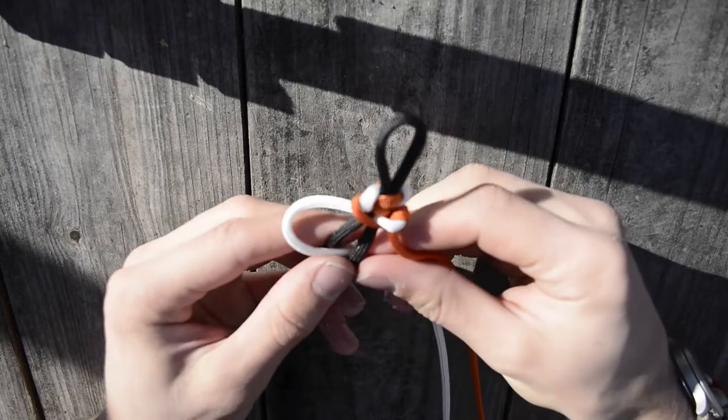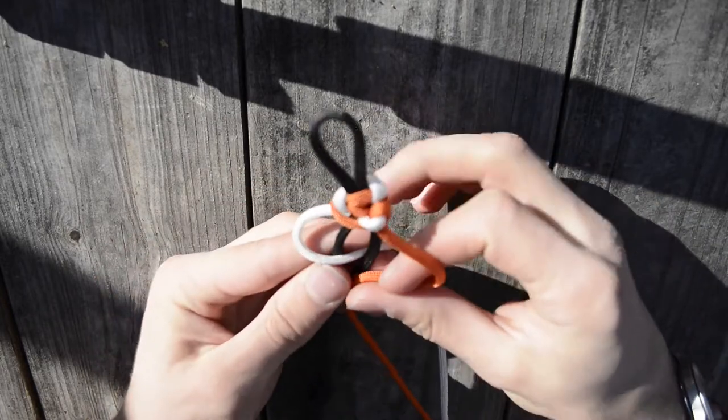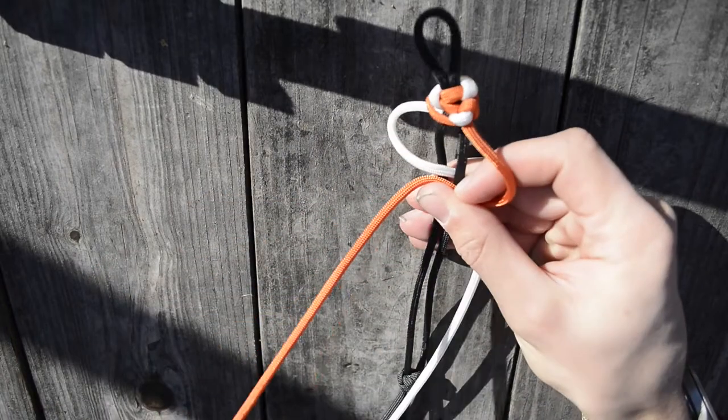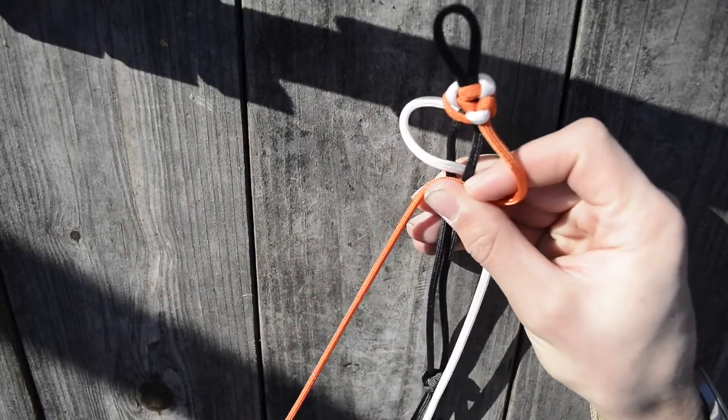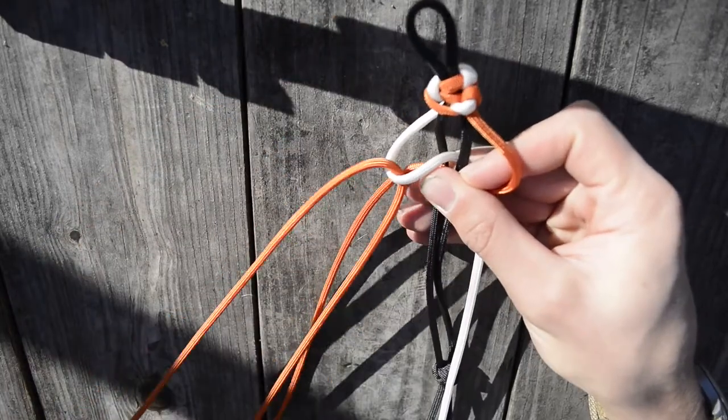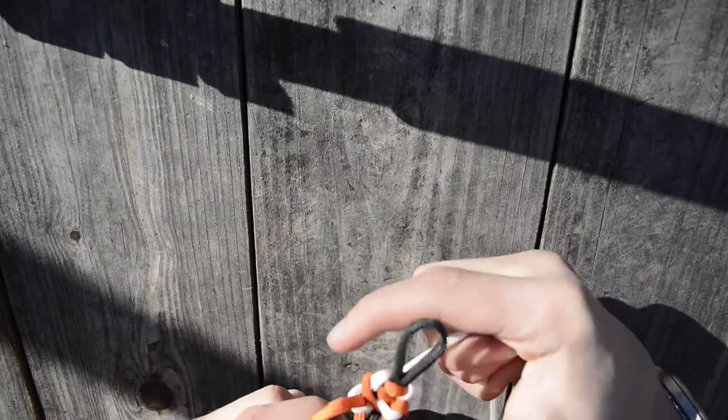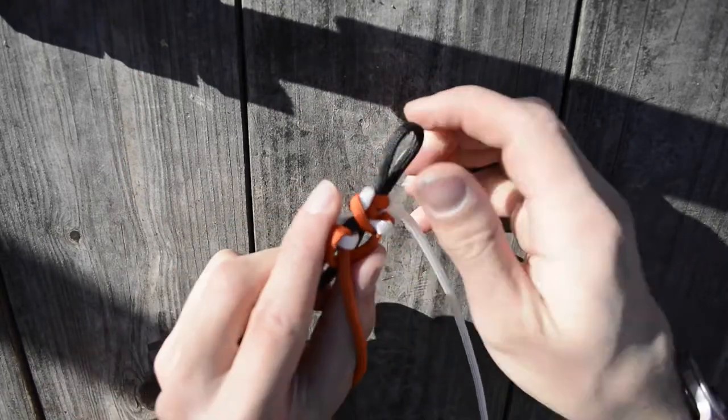So once again, taking this white strand and setting it over, then under, and then taking this one and setting it, if you don't drop your cord, in this loop. And then right and proper, you're going to bring it over so that it'll look like this. And then basically continuing the same pattern.